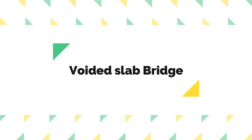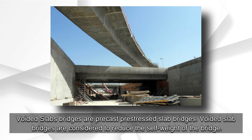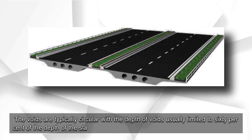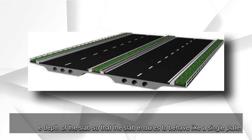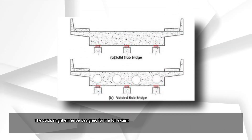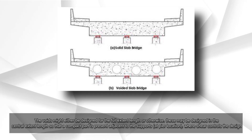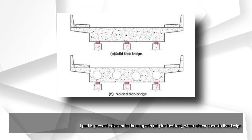Voided slab bridge. Voided slab bridges are precast pre-stressed slab bridges considered to reduce the self-weight of the bridge. The voids are typically circular with the depth of voids usually limited to 60% of the depth of the slab so that the slab continues to behave like a single plate. The voids might either be designed for the full extent length, or may be designed in the central extent length so that a compact part is present adjacent to the supports at pier location, where shear controls the design.